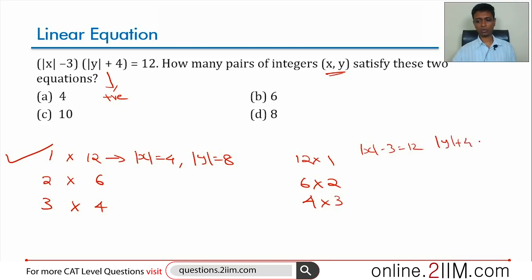|x - 3| = 12, |y + 4| = 1. But |y + 4| is greater than or equal to 4, so |y + 4| cannot be 1. This is not possible. |y + 4| cannot be equal to 2, not possible. Cannot be equal to 3, not possible. Straight away, these three we can eliminate.